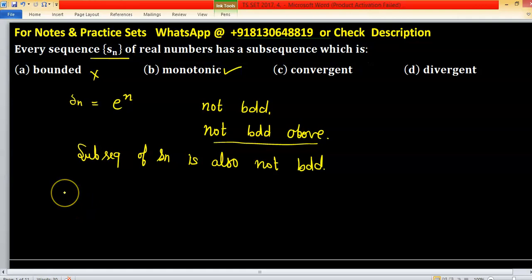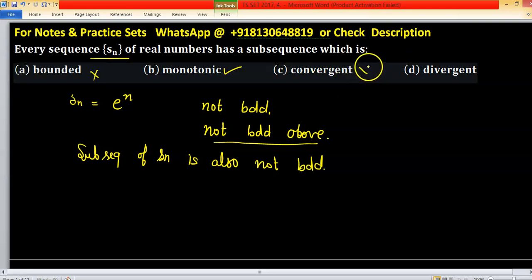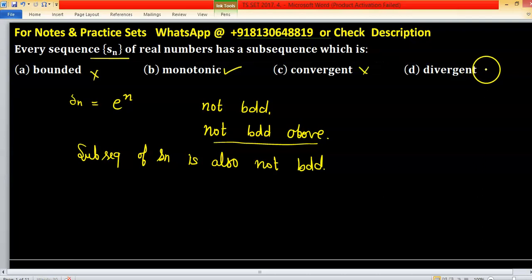A subsequence of a sequence may be convergent or divergent. So option c is not true and also d is not correct.